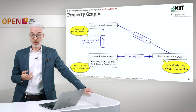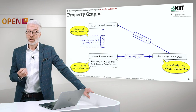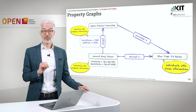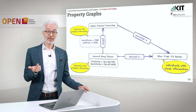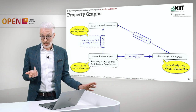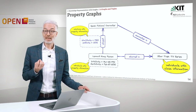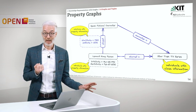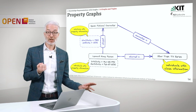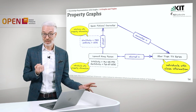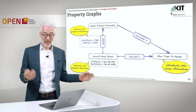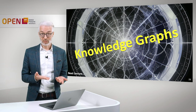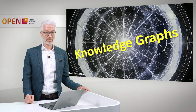Property graphs are already rather powerful, but the only semantics given in a formal way here is the semantics of entities, relations, and classes — nothing more. We do not exactly know what a start date means, we do not exactly know what a person is, and we do not exactly know what the relation 'character in' really means. For that, we would need more, and that brings us into the realm of so-called knowledge graphs, which will be the subject of the next part of this lecture.